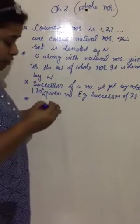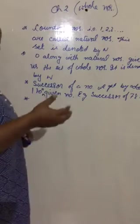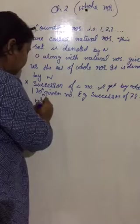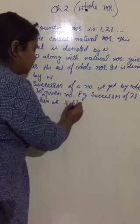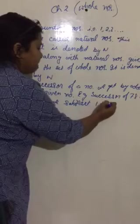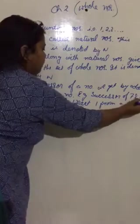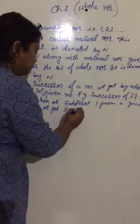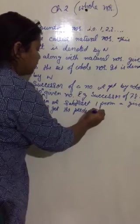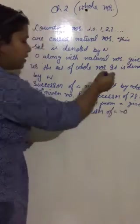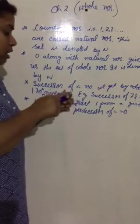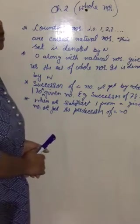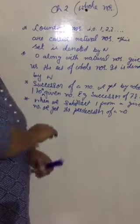Next is, if I say what comes before 7? So, what comes before 7? 6. Right. So, what is this? This is called as the predecessor. So, when we subtract 1 from a given number, from a given number, we get the predecessor of the number. Right? The predecessor of a number. Now, you have to write your own example here. I won't write down. So, if I say what is the predecessor of 100? Right. So, 100 minus 1. So, 99 is the predecessor.